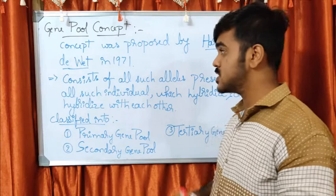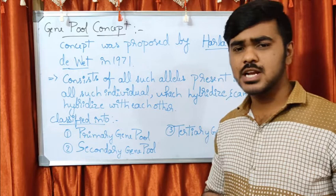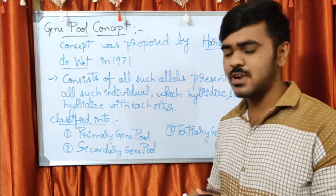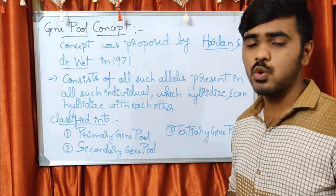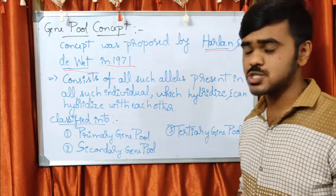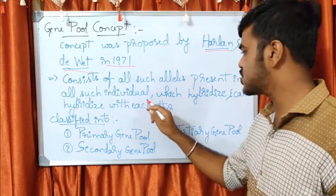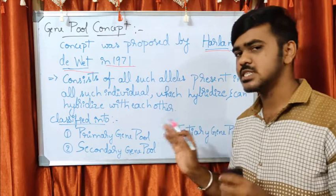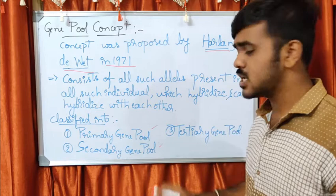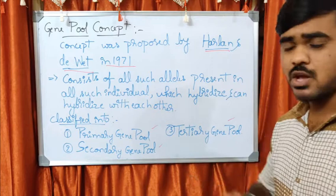Now let's discuss another important concept: the gene pool concept. I'll frankly say that gene pool concept and germplasm were always confusing for me, but I clarified my doubts and would like to discuss them with you. This concept was proposed by Harlan and David in 1971. It consists of all alleles present in all individuals which hybridize and can hybridize with each other. The classifications are primary gene pool GP1, secondary gene pool GP2, and tertiary gene pool GP3.